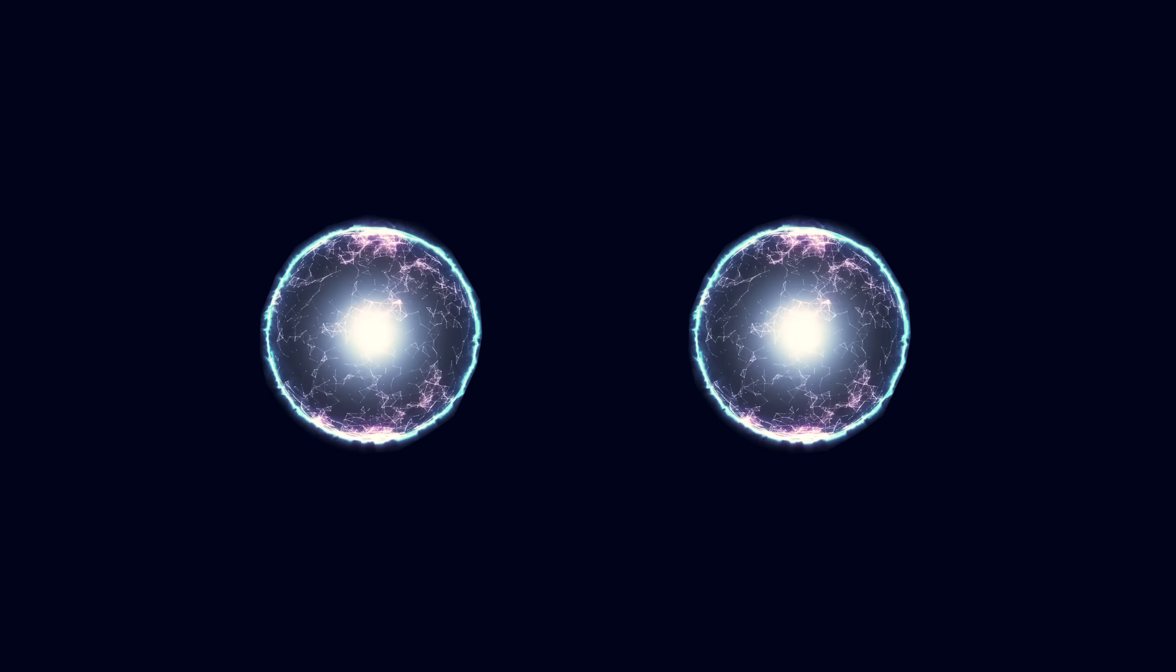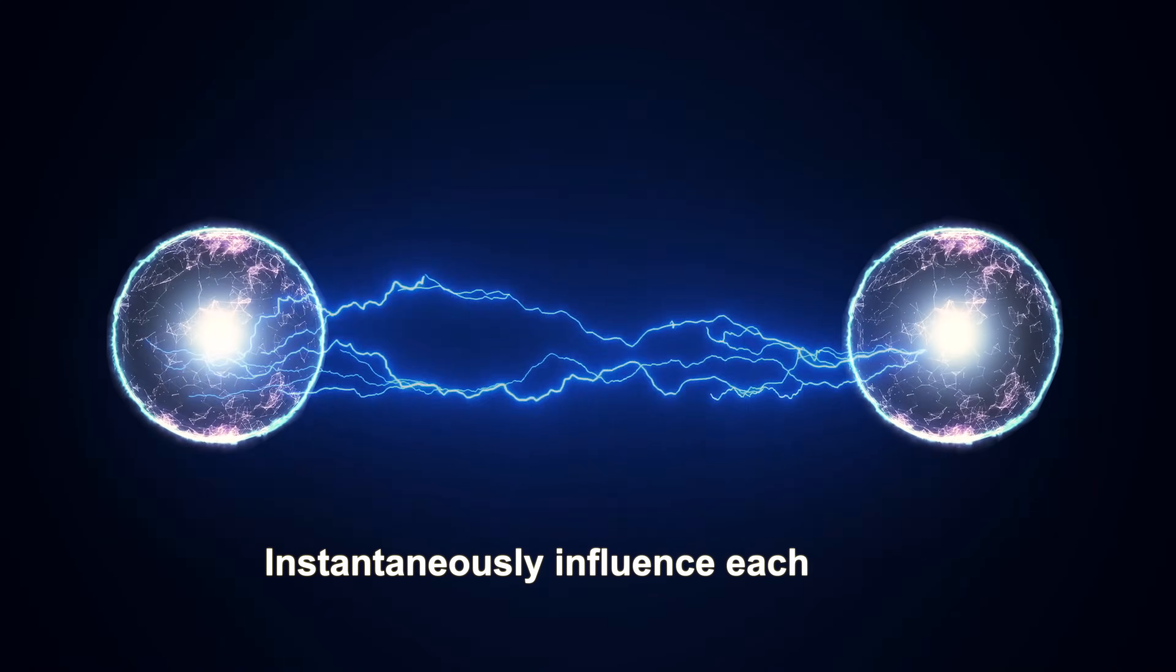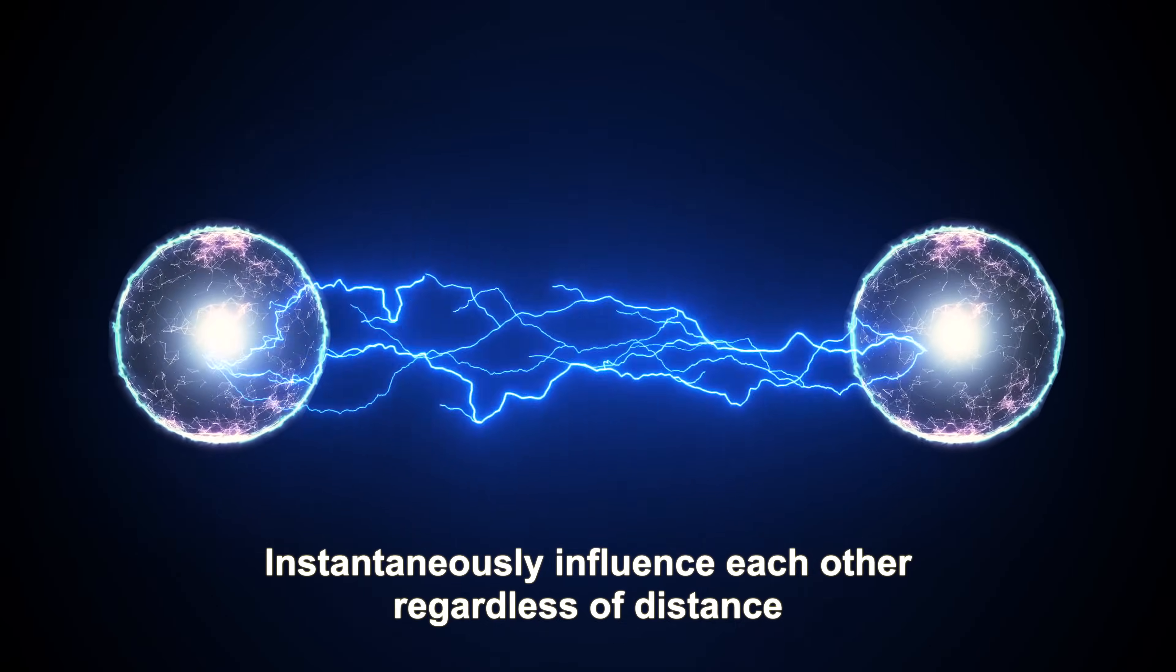Quantum entanglement involves two particles, such as a pair of photons or electrons, that instantaneously influence each other no matter how far apart they are.